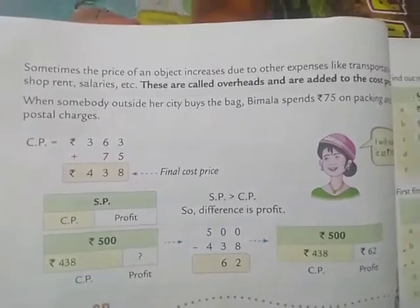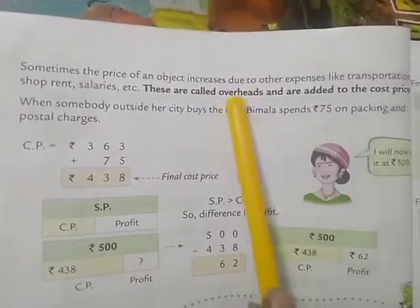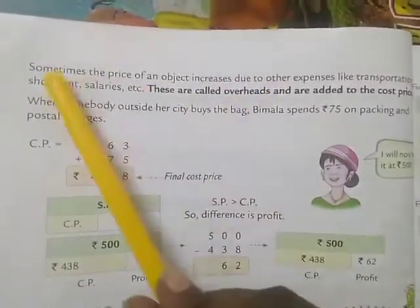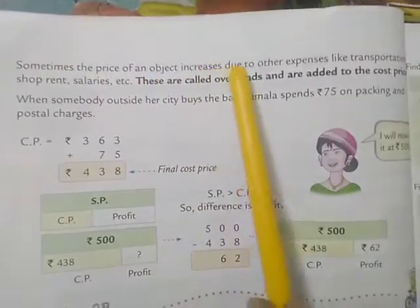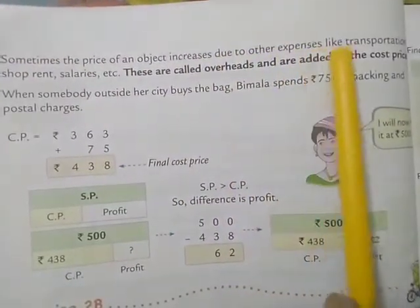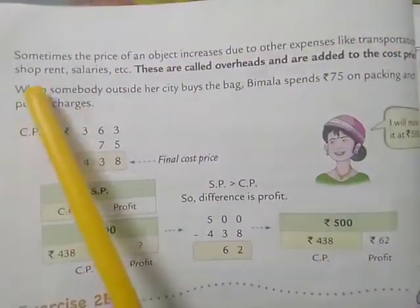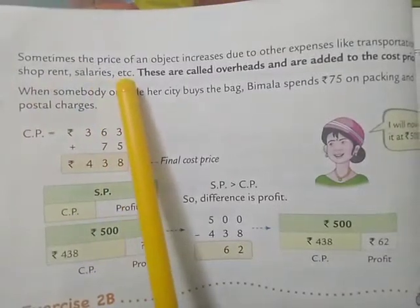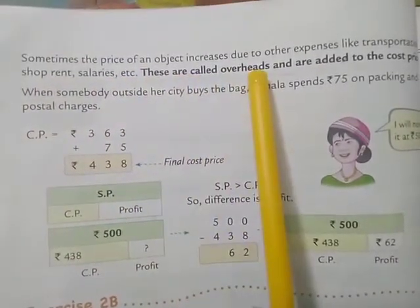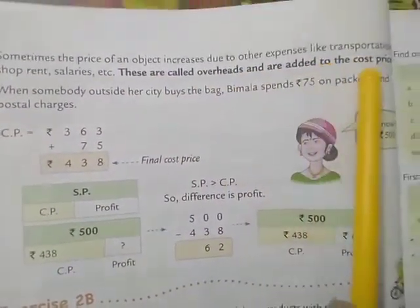Today we are going to learn about overheads. So what is overheads? Sometimes the price of an object increases due to other expenses like transportation, shop rent, salaries etc. So these are called overheads and are added to the cost price.